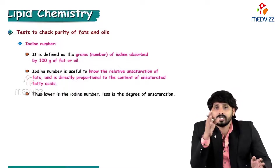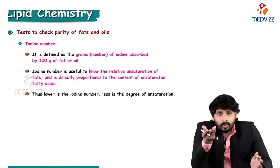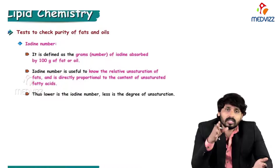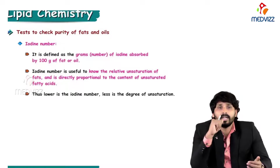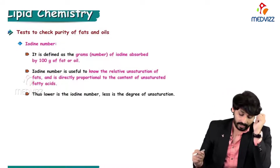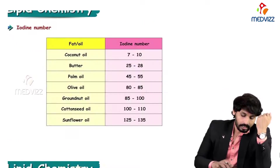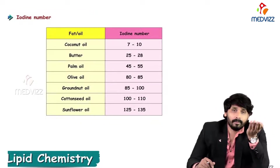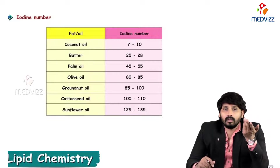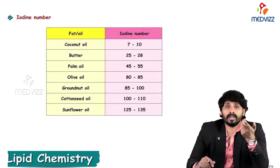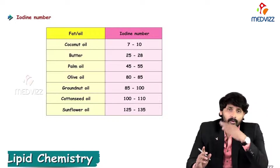The iodine number measures the relative unsaturation of fats. If the oil has more unsaturated fatty acids, more iodine is absorbed; if more saturated, less iodine is absorbed. It is directly proportional to unsaturated fatty acid content. For example: coconut oil 7-10, butter 25-28, palm oil 45-55, olive oil 80-85, groundnut oil 85-100, cottonseed oil 100-110, sunflower oil 125-135. If these numbers fall outside the reference range, adulteration is suspected.